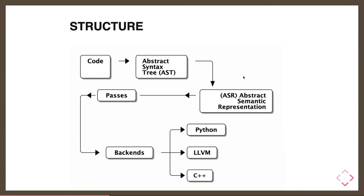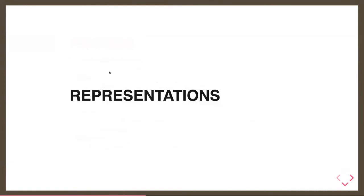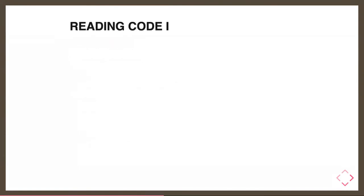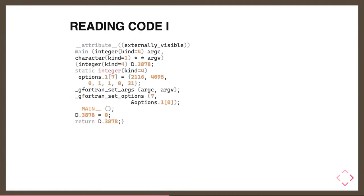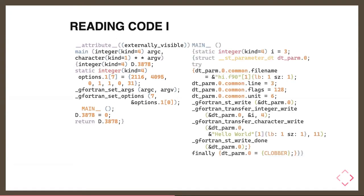I won't be talking too much about the backend. Gagan Deep was working in that part a lot, and I'm going to be talking about the AST to ASR translation. For this talk, what I'm going to discuss is the representation of your code in the compiler. We all know and understand Fortran — but what is this other representation telling us?